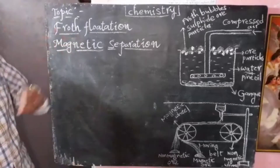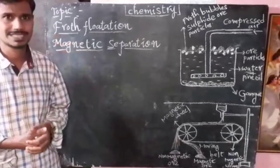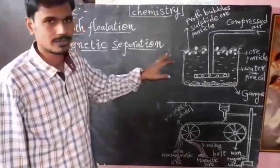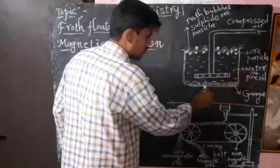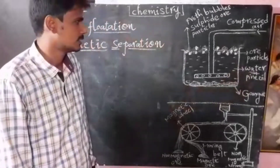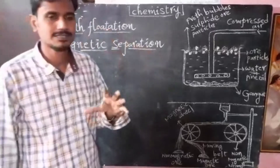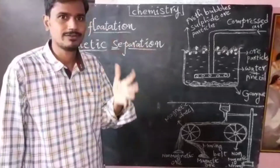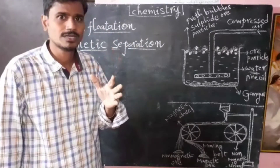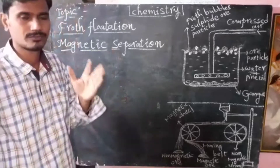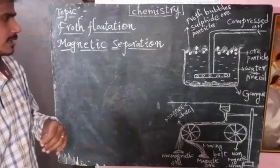In froth flotation process, we use a froth flotation cell. First of all, in this cell we take three-fourths water. This froth flotation process is mainly useful to separate sulfide ore. This is very important — froth flotation process is used to separate sulfide ore. This will be asked many times in examinations.